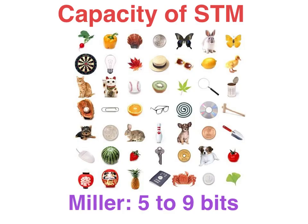A distinguishing feature of STM as opposed to the other two memory stores — sensory and LTM — is the limitations in terms of how much STM can hold and how long it can hold it. Miller, famous for his experiments on the capacity of STM, came up with a magic number of seven plus or minus two, i.e., five to nine bits of information.